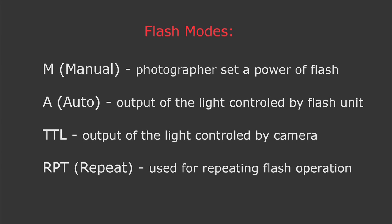First of all, let's talk about basic flash modes you can find in your flash unit. The first mode is manual mode — in this mode the photographer is the one who sets the power of the flash. The second mode is auto mode — in this mode the flash unit decides the output of the light. The flash unit releases a pre-flash, measures the exposure, and then decides how much light should be released to expose the scene properly.